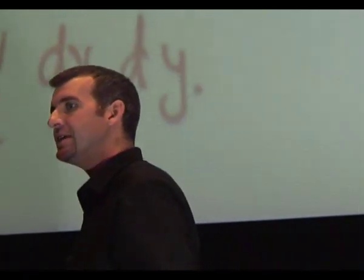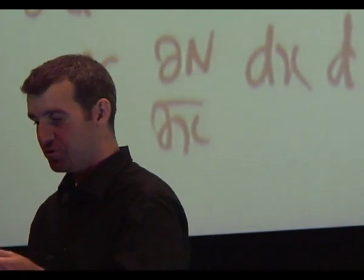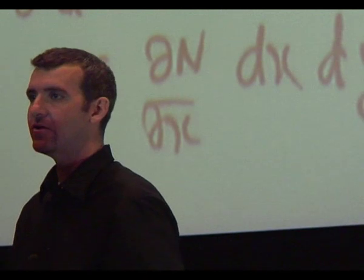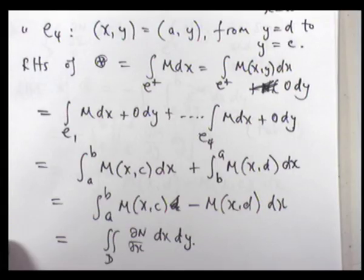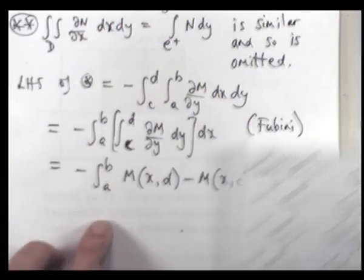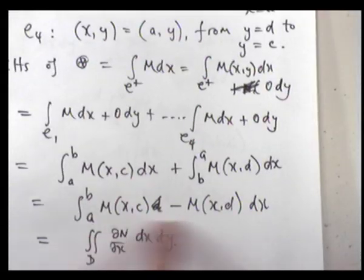I won't present the details for proving (★★) — I invite you to do that. Once you have (★) and (★★), just add them together to get Green's theorem.